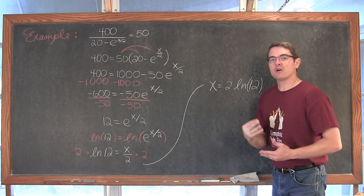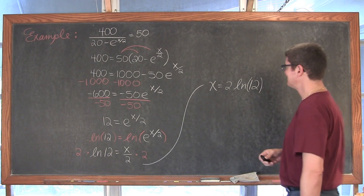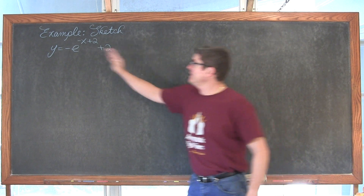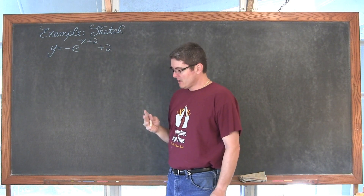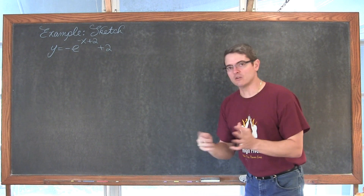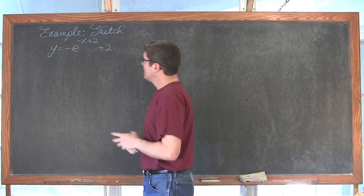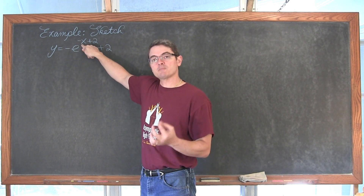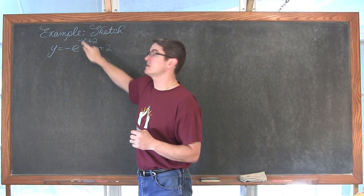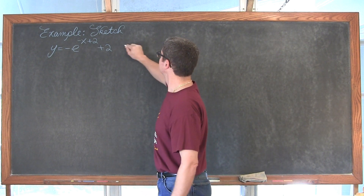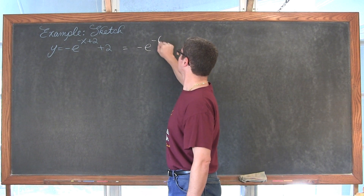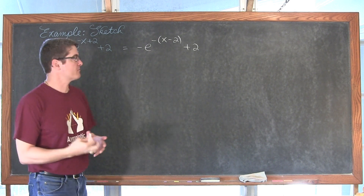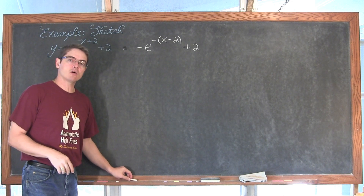Now let's sketch y equals negative e to the negative x plus 2, plus 2, using our knowledge of transformations. Before identifying transformations, because there are two terms in the exponent, I like to factor the negative coefficient away from x and rewrite it as negative e to the negative times the quantity x minus 2, plus 2. This makes it easier to determine the direction of horizontal shifts.